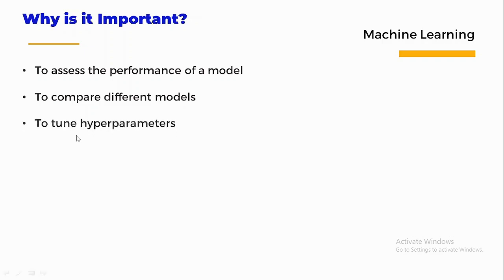The next reason is to tune the hyperparameters. Evaluation metrics are often used to tune the hyperparameters of a machine learning model. Hyperparameters control the model training process, such as the learning rate and the number of epochs. By adjusting these hyperparameters, data scientists can improve the performance of their model.